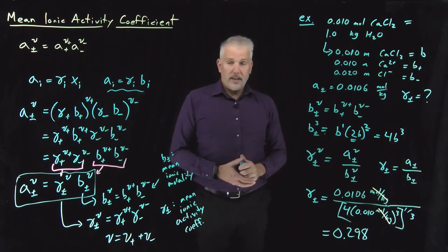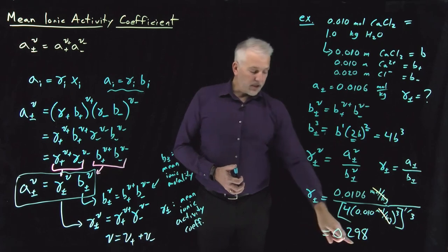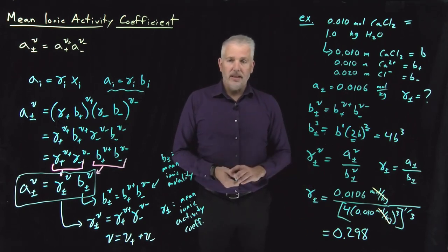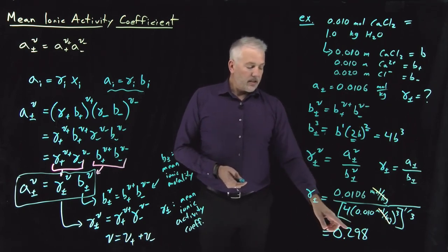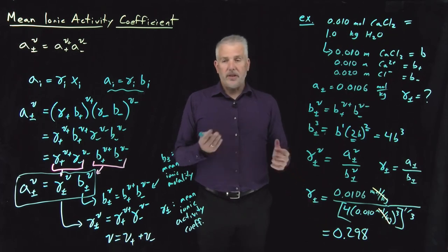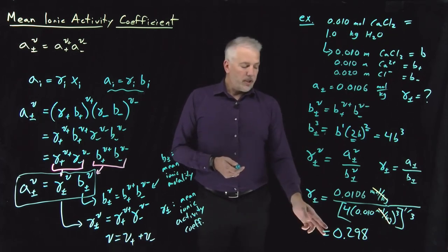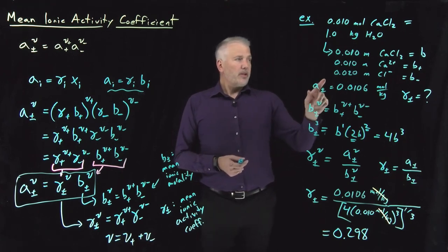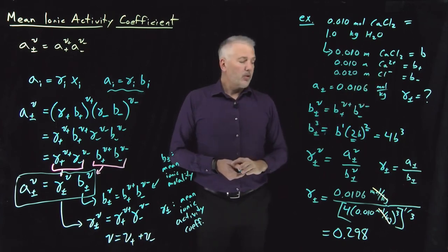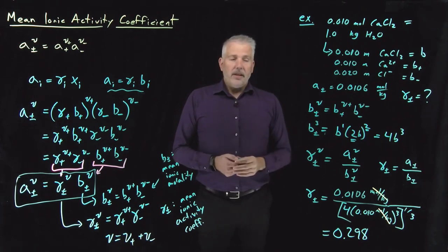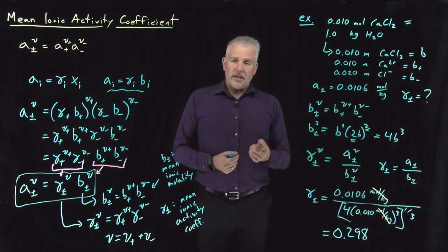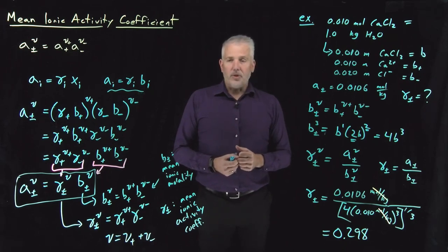What that means physically is this solution is very far from ideal. This numerical value is well below one, so the ions in this solution are behaving only about 30% ideally. We can't say from this result alone whether it's the calcium or chloride ions contributing more to this non-ideality, but generally the more strongly charged calcium ions will be more non-ideal than the singly charged chloride ions. That general statement — that more strongly charged ions tend to contribute more to non-ideality — leads to an idea we'll consider in the next lecture.